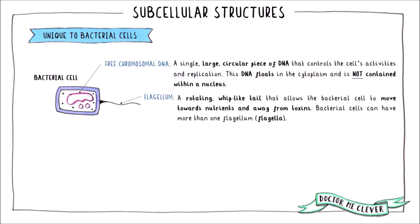Bacteria can also have a flagellum, or if they have more than one, the plural is flagella. The flagellum is a whip-like tail that can rotate to move the bacterial cell towards nutrients or away from harmful toxins.